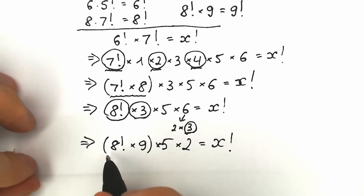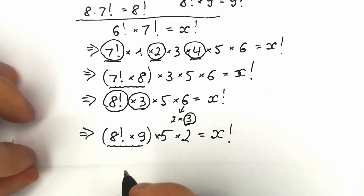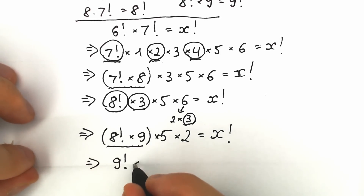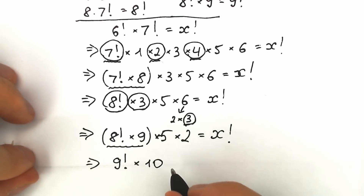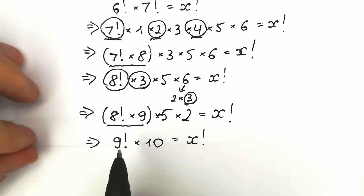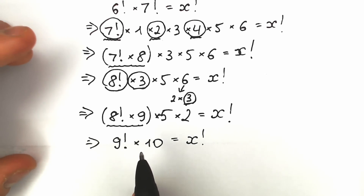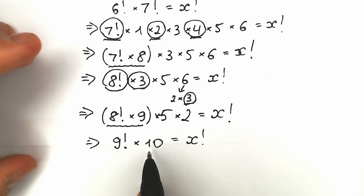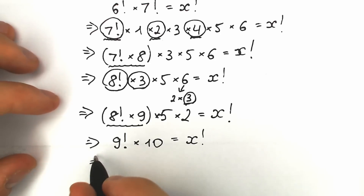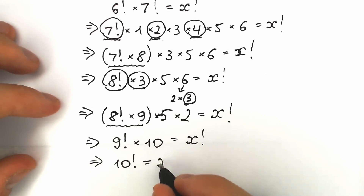8 factorial times 9 equals 9 factorial. So we have 9 factorial times 5 times 2, which equals 9 factorial times 10, equal to x factorial. And for the final step: 9 factorial is a product from 1 to 9, and multiplying by 10 gives us a product from 1 to 10, which is 10 factorial. So 10 factorial equals x factorial, meaning x equals 10.